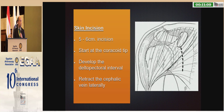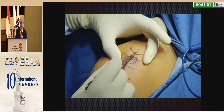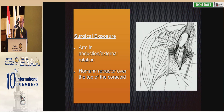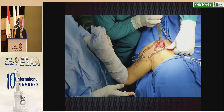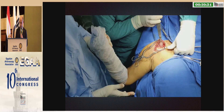The skin incision is five to six centimeters, starting at the coracoid tip. Develop the deltopectoral interval and retract the cephalic vein laterally. I recommend going lower than the tip of the coracoid to have a better exposure. For the surgical exposure, place the arm in abduction and external rotation, and the Hohmann retractor is put on top of the coracoid, as you can see in the picture. This gives a good vision of the coracoid process.